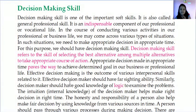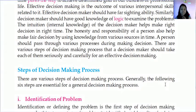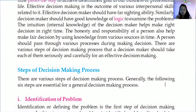Effective decision making is the outcome of various interpersonal skills. Effective decision makers should have farsighting ability. Decision makers should have good knowledge and logic to examine problems. Intuition — the internal knowledge of the decision maker — helps to make the right decision at the right time. The honesty and responsibility of a person help to make fair decisions by using knowledge from various sources. You should be like a farsighted person, able to think two steps forward while making decisions in business activities.